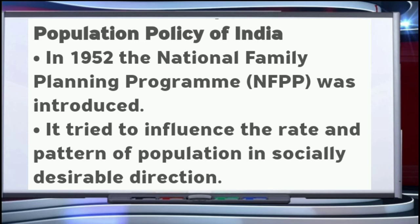Some of the main objectives of the population policy or family planning policy are: 1st, to reduce the total fertility rate to 2.1; 2nd, to provide quality contraceptives to promote the standard of 2 children; 3rd, to aim at full coverage of registration of births, deaths, marriages, and pregnancies; 4th, to provide injections to prevent diseases in children; 5th, to reduce the infant mortality rate to 30 per thousand; 6th, to reduce the number of school dropouts by 20%.